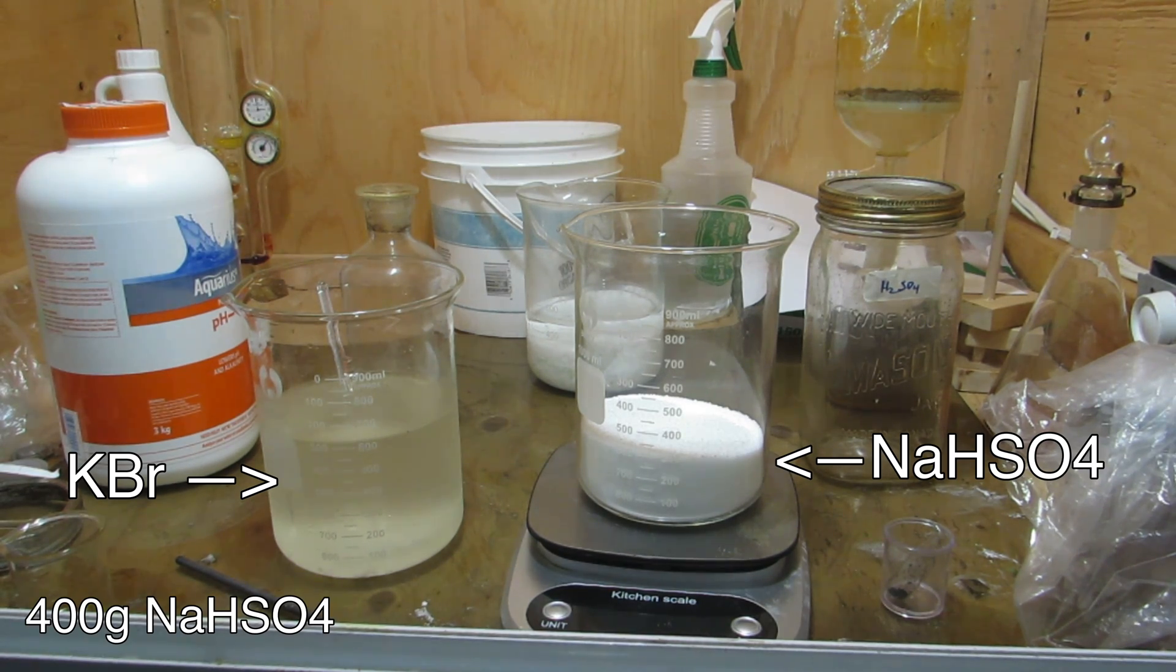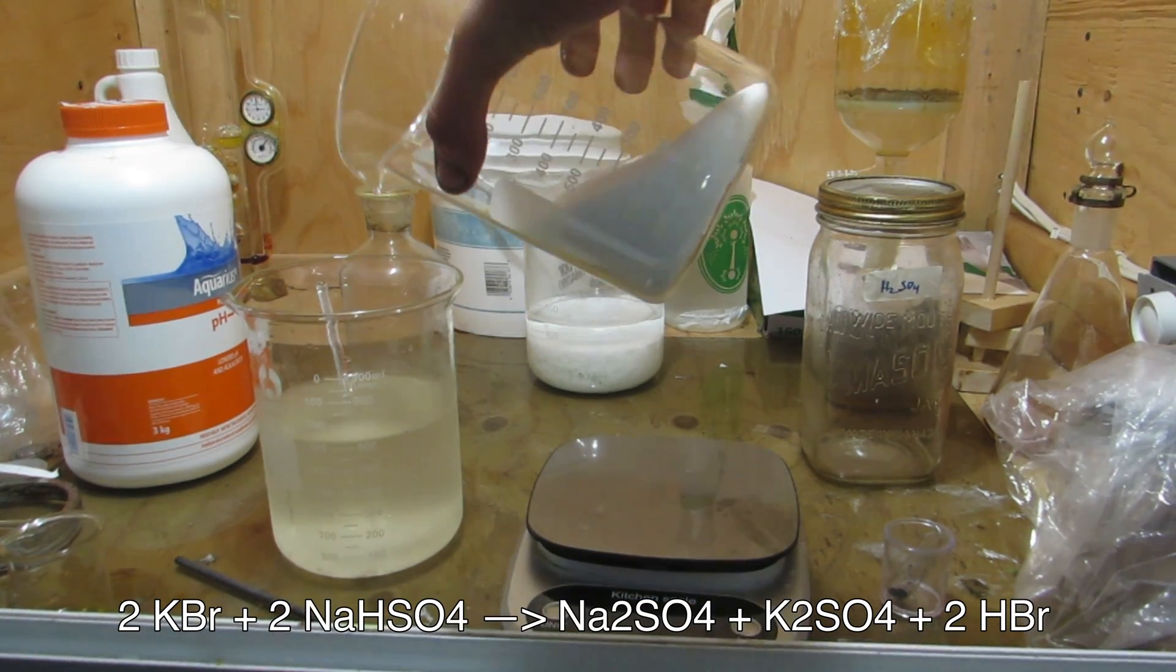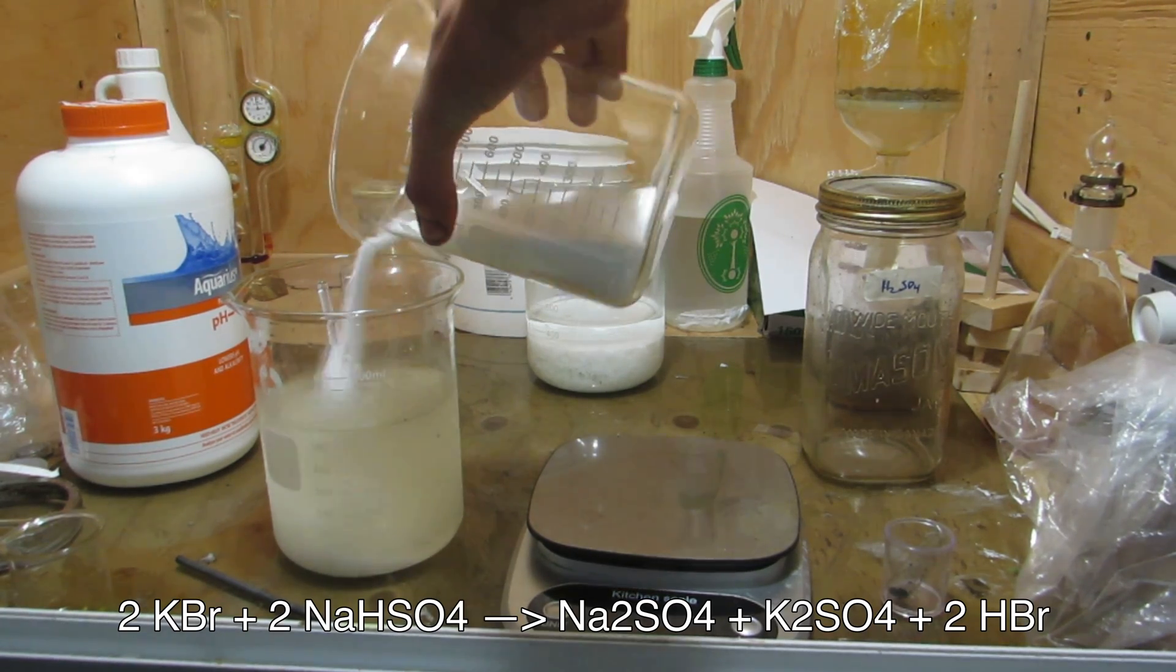Next, 400 grams of sodium bisulfate was measured out and added to the potassium bromide solution. Sodium bisulfate could be purchased as a pool chemical.